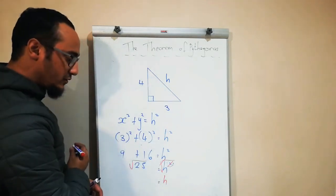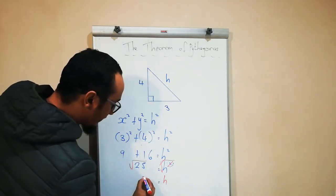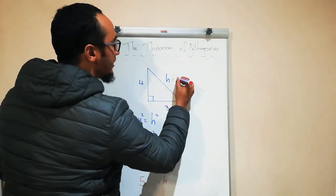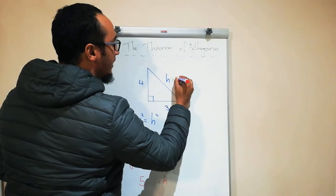So the square root cancels out the square. What am I left with? h. And what's the square root of 25? Five. Therefore, because of my calculation, I find that h should be equal to five.